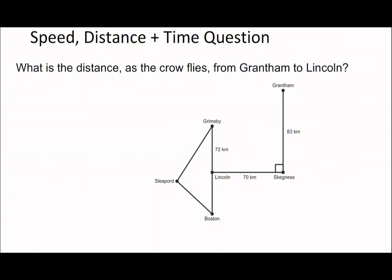This one starts off not too bad. What is the distance as the crow flies from Grantham to Lincoln? You can see this is just a bit of Pythagoras, so all you have to do is 70 squared plus 83 squared, square root.